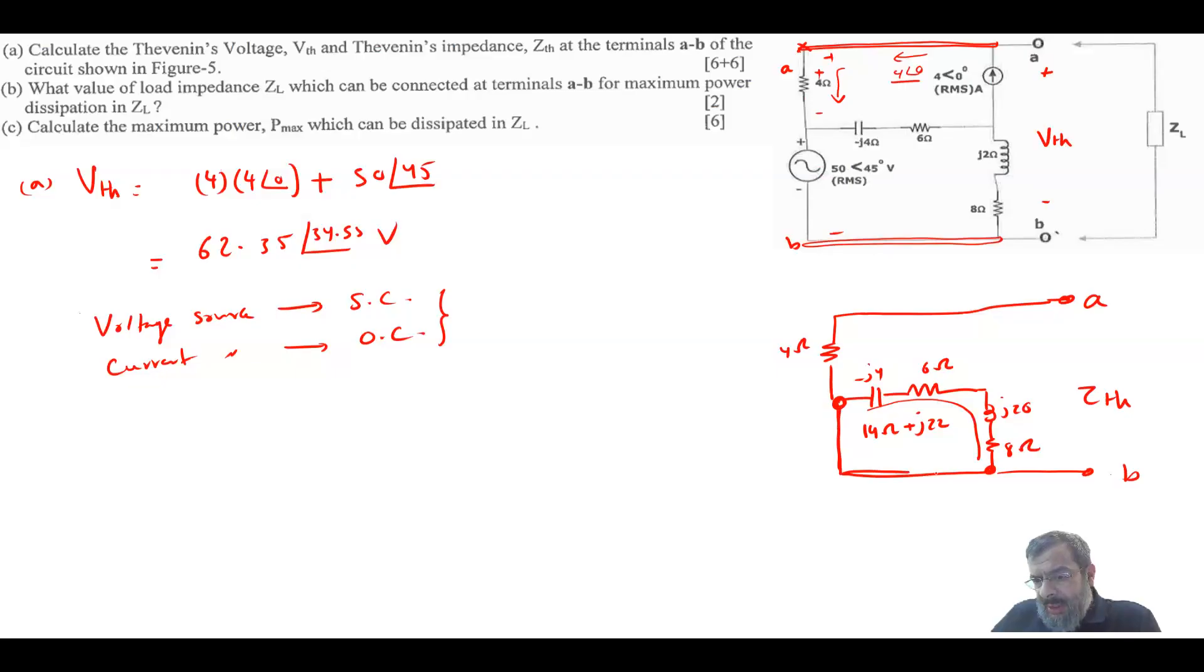So there's a short circuit that short this circuit. So this would be basically 0. So your Z Thevenin would be the 4 ohm.